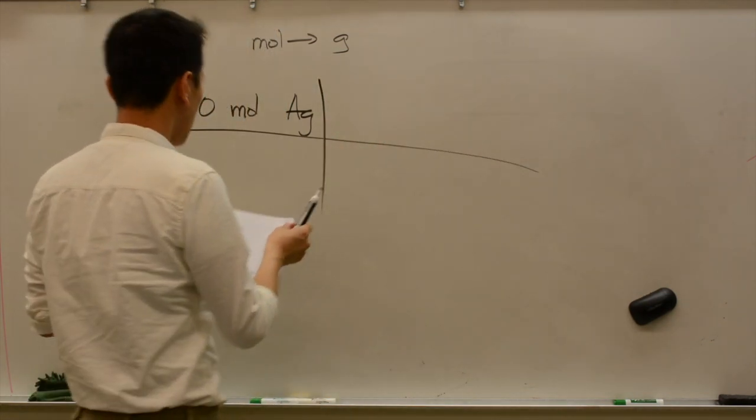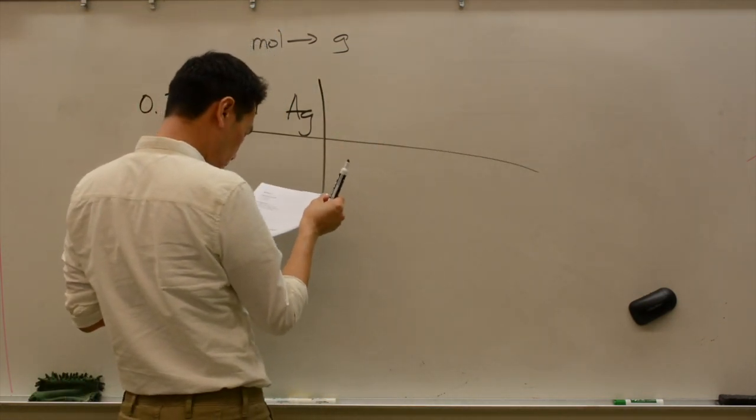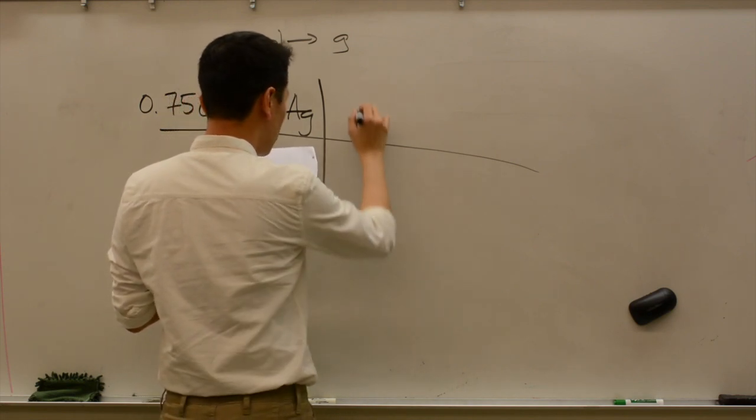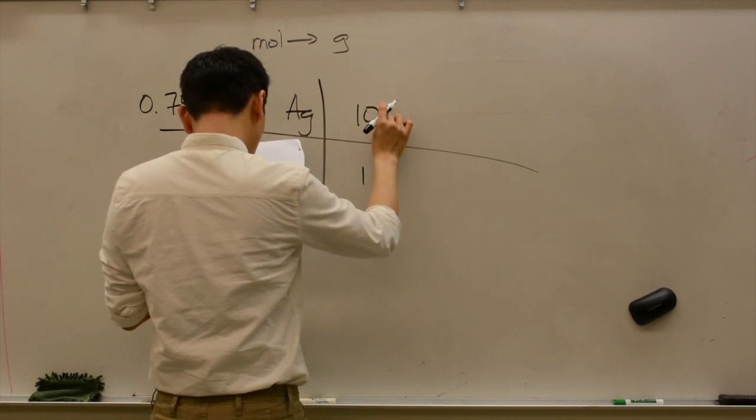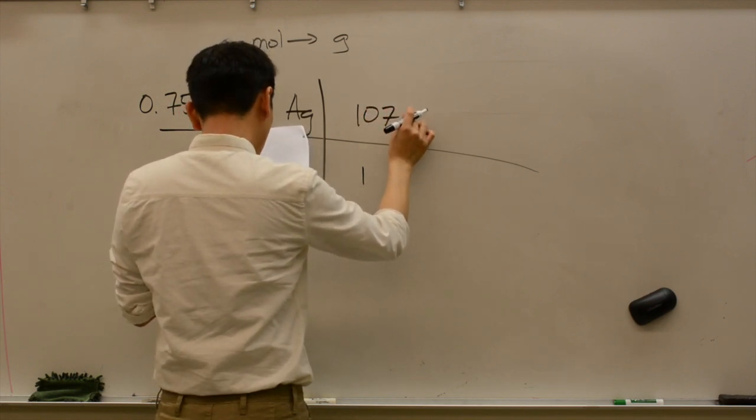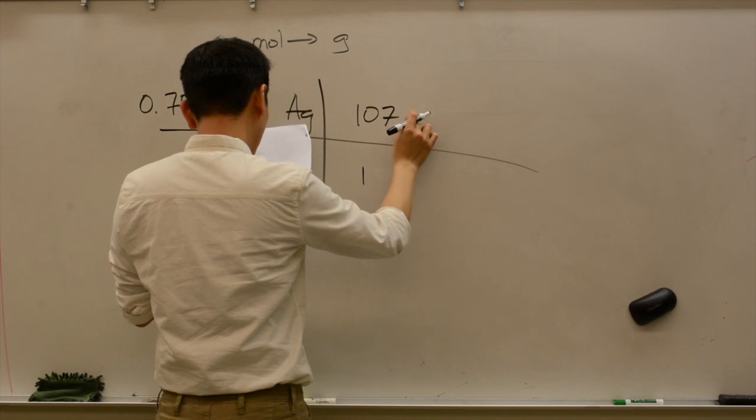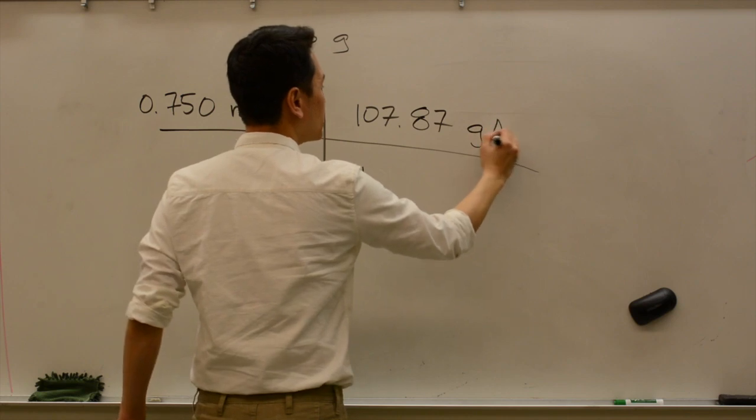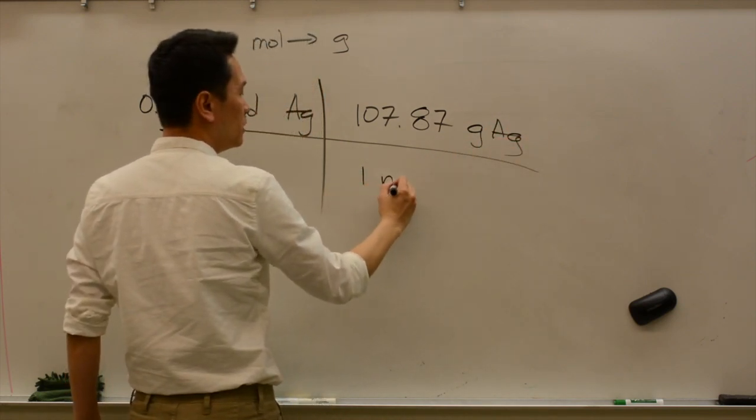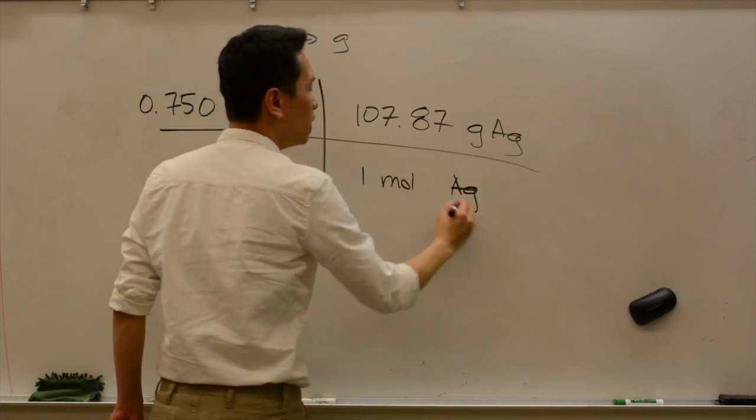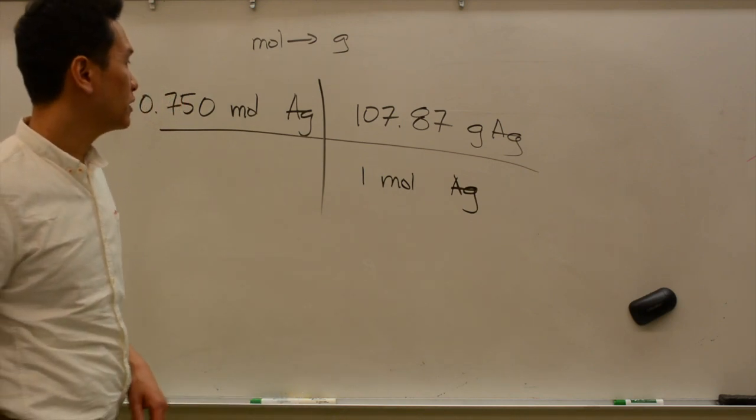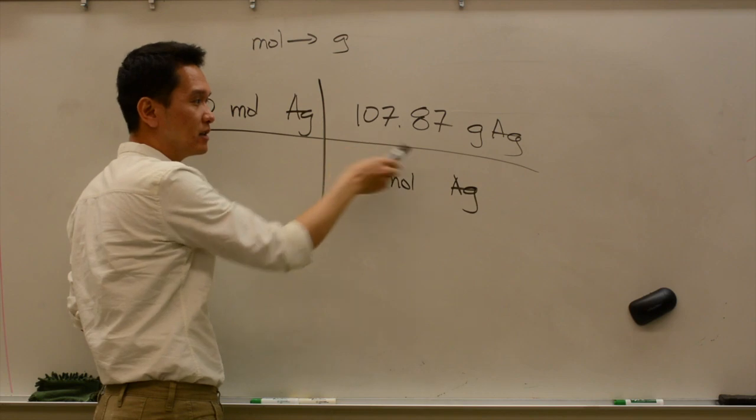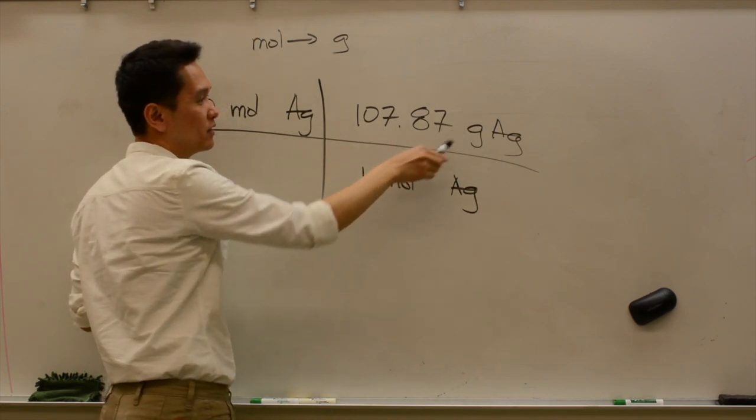So you go to your periodic table and look up silver, and silver has a molar mass of 107.8682, but you can just round to 107.87 grams of silver for every 1 mole of silver. This is the molar mass of silver, and molar mass is grams per mole.